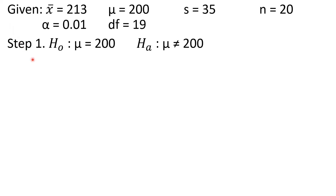For step 1, we identify the null and alternative hypotheses. The null hypothesis is that the population mean is equal to 200. The alternative hypothesis is that the population mean is not equal to 200. Because it is not specified in the problem whether the effect is higher or lower, meaning it can be either lower or above 200, the alternative hypothesis uses the inequality symbol 'not equal to.'